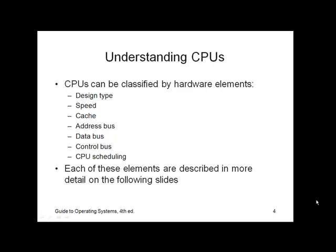A CPU can be classified by hardware elements: the design type, the speed of the CPU, how much cache or onboard memory that CPU has, the address bus, the data bus, and the control bus — we'll talk about those in a minute — and CPU scheduling. Let's look at each of these in more detail.